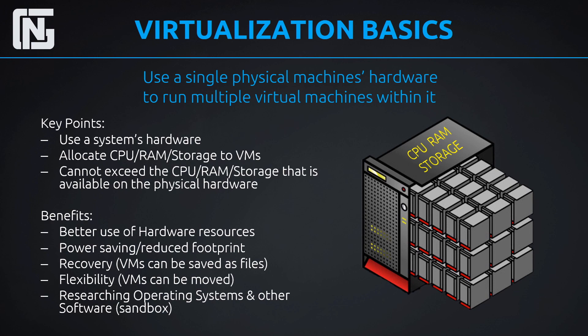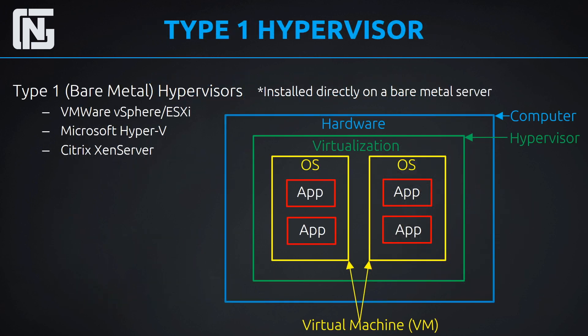Now let's talk about hypervisors, starting with the type 1 hypervisor. The type 1 hypervisor is when we install our virtualization layer — our hypervisor — directly onto bare metal hardware, like directly onto a server. For example, VMware ESXi can be loaded directly onto a completely bare server with nothing else installed on it except for the hardware. That's a type 1 hypervisor: installing the virtualization layer directly into the bare metal server.